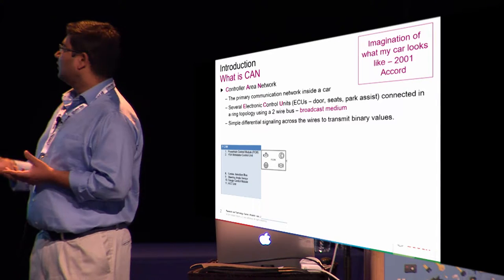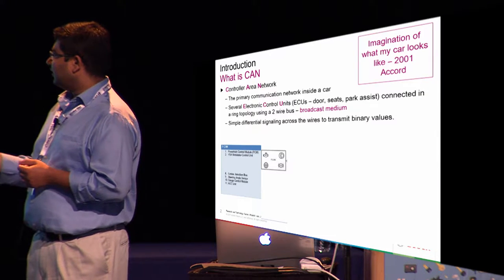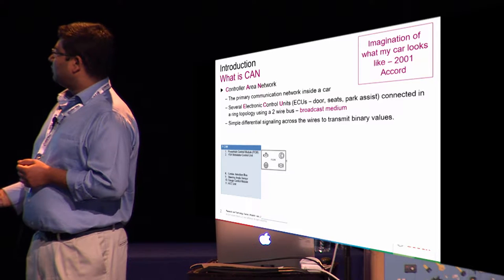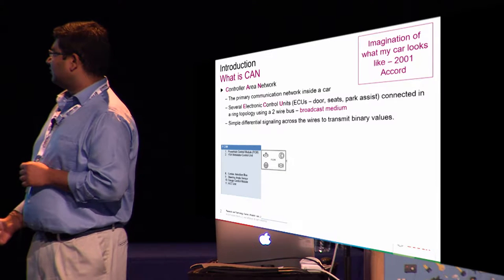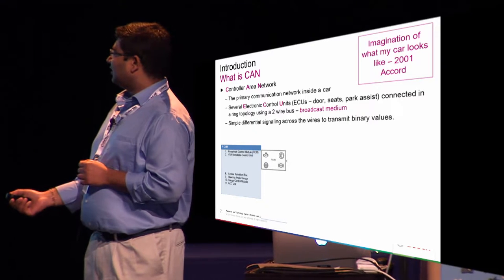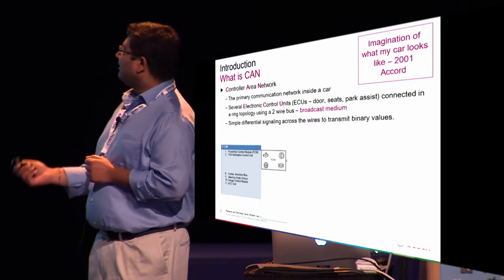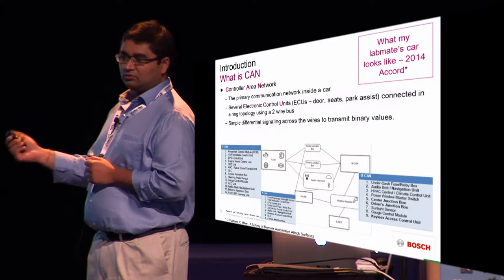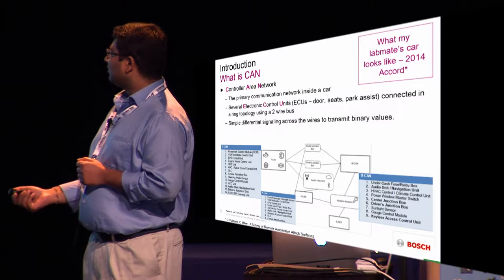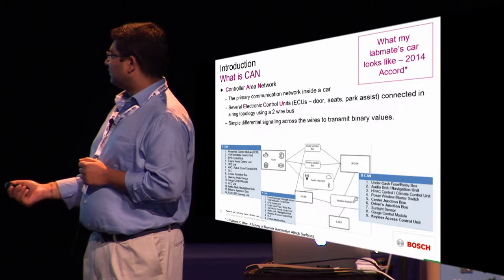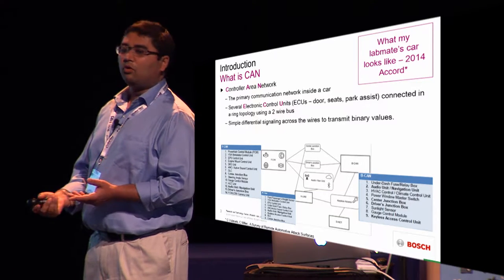If I was to imagine what my car — a 2001 Accord — looks like inside if I open up the bus, it would probably look like this. This is a bit of a drawing from my imagination, but it has a very simple structure. If I open my lab mate's car, which is a 2014 Accord, this structure is well documented, and you can see that the complexity of this network has grown.